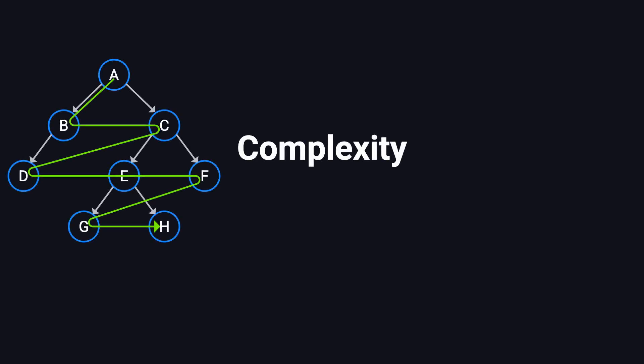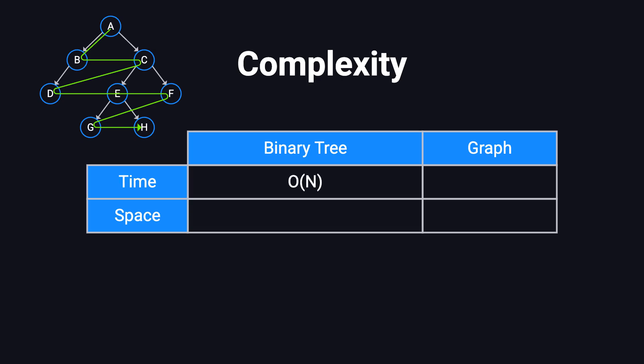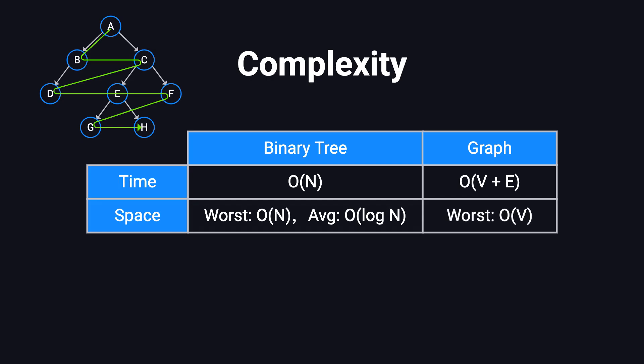Now let's talk about the complexity of BFS. For a binary tree, the time complexity is O(N), where N is the number of nodes, since each node is visited once. For graphs, the time complexity is O(V + E), where V is the number of vertices and E is the number of edges, because BFS processes all nodes and edges. The space complexity depends on the maximum number of nodes stored in the queue at any given time. In the worst case, for a complete binary tree, the queue may hold an entire level of nodes, reaching O(N). For a balanced binary tree, the queue size is usually proportional to the tree's height, leading to O(log N) space complexity. For graphs, the worst-case space complexity can be O(V), depending on the structure of the graph.